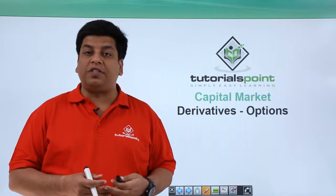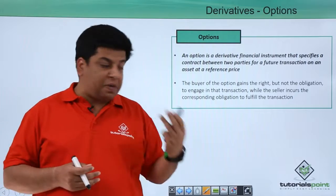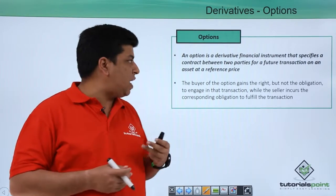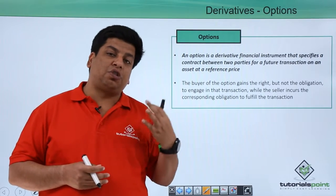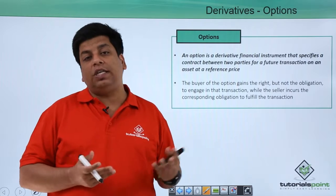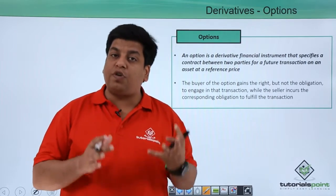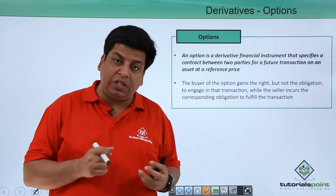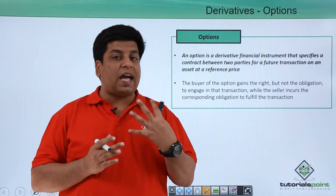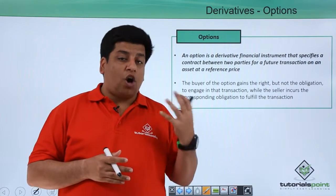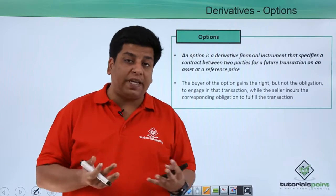Let's understand what an option derivative is. An option is a derivative financial instrument that specifies a contract between two parties for a future transaction on an asset at a predetermined or reference price. Unlike a futures contract — where it is mandatory to execute the contract — in the case of an option, it is not mandatory. An option gives you the right to buy or sell, but not an obligation to buy or sell.